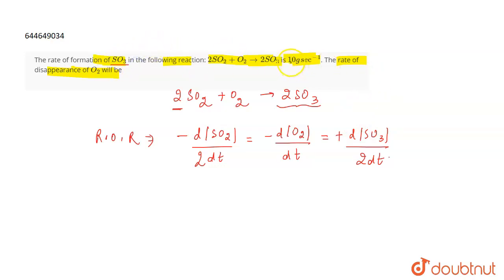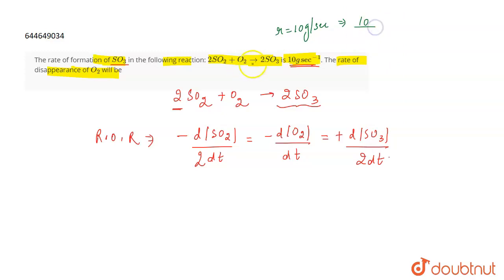We are given that the rate of formation of SO3 is 10 grams per second. We need to convert this into moles per second because we are talking in terms of concentration. Moles = given weight / molar mass. The molar mass of SO3 is 80 grams per mole, so moles = 10/80 moles per second.